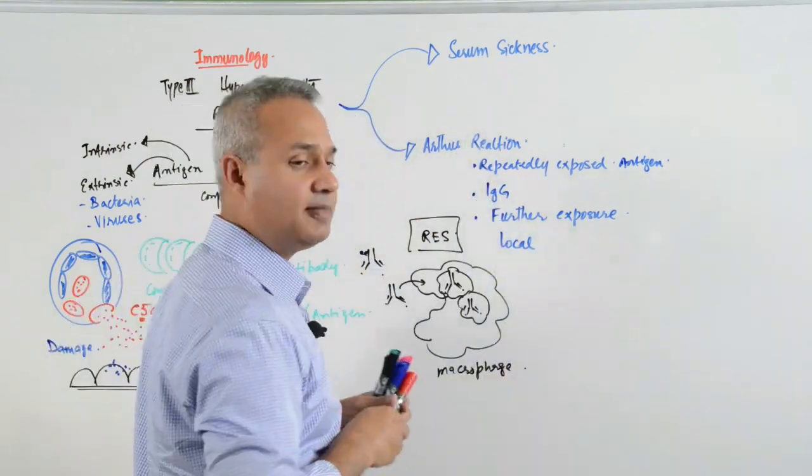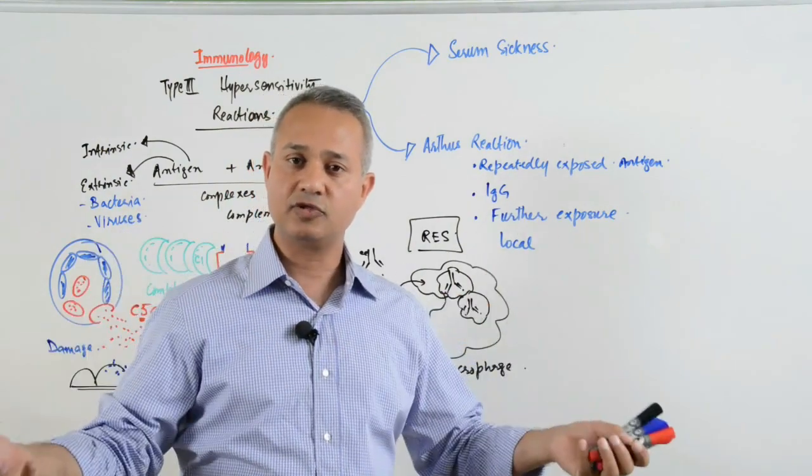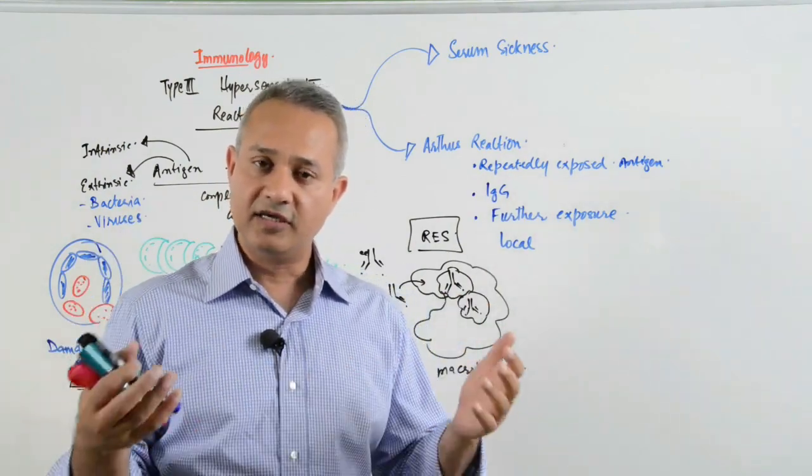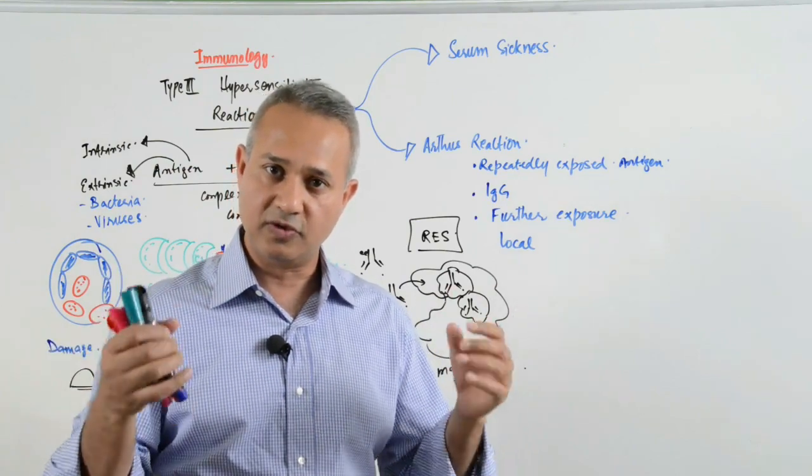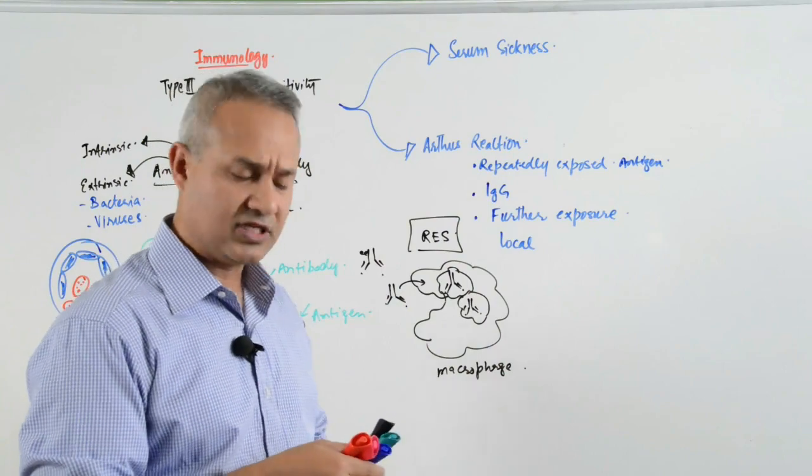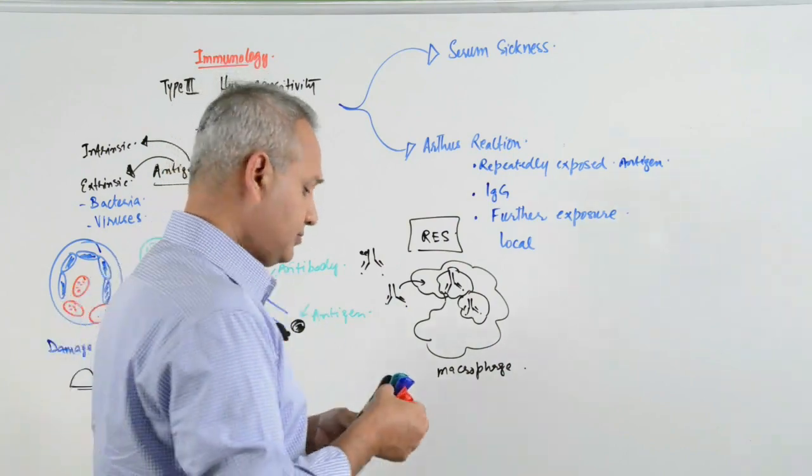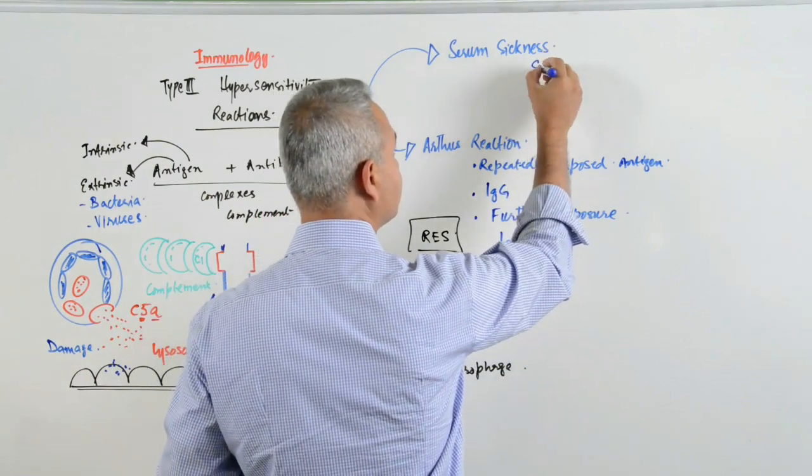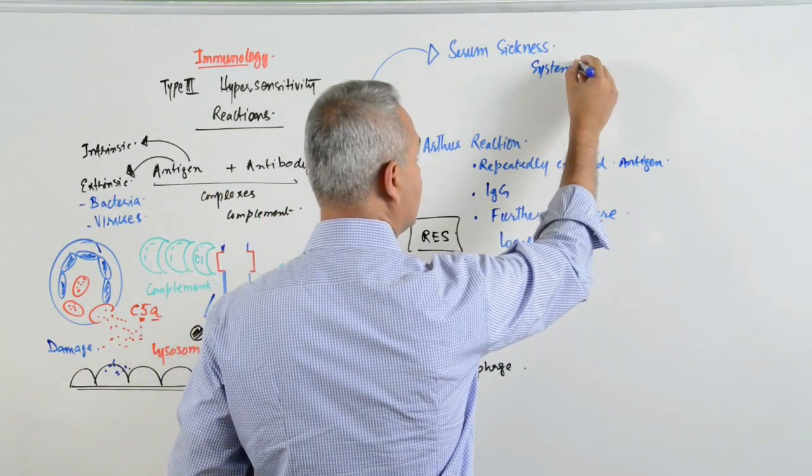Serum sickness, on the other hand, named after the serum when the serum used to be transfused and there was not much knowledge of the differences in the human tissue antigens and the sickness would start occurring. Nowadays, serum sickness is really rare, but the serum sickness is more systemic.